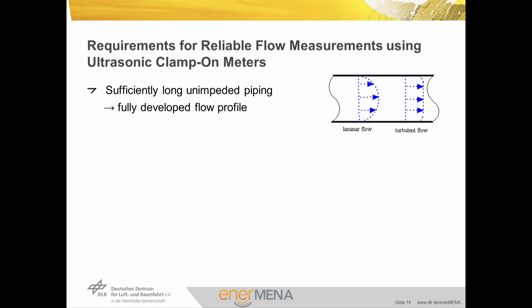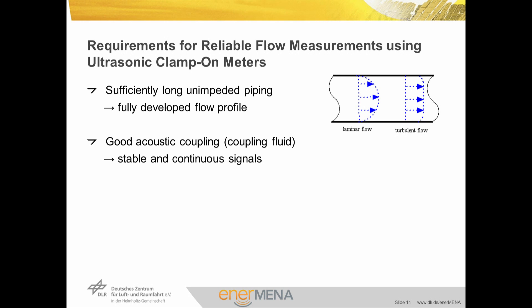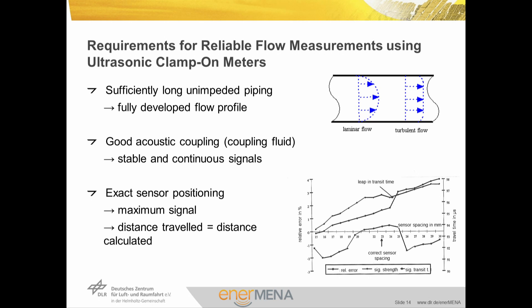There are a number of preconditions to assuring reliable flow measurements using ultrasonic clamp-on meters. In order to deduce the volumetric flow rate from the mean fluid flow velocity, the flow profile must be known, and can only be derived for fully developed flows. Assuring fully developed flow implies the need for a sufficiently long unimpeded piping upstream of the measurement point. Furthermore, good acoustic coupling using a coupling gel must be provided to produce stable and continuous signals. Sensors must also be positioned exactly, not only for signal quality but to assure the distance actually traveled by the signal corresponds to the calculated distance used in evaluation.